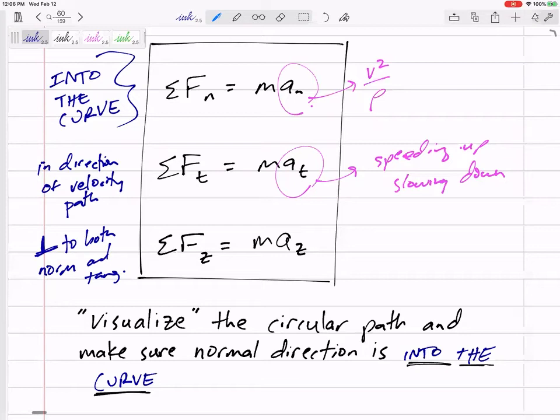So free body diagram, sum of the force equals mass times acceleration, and then that will lead us to maybe the acceleration, lead us maybe we need the velocity and the v squared over rho, then that will kind of lead us to solve for the unknown.